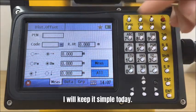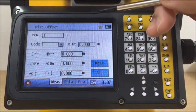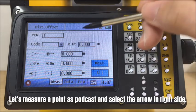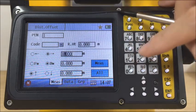Because we are not in the job, I will keep it simple today. Let's measure a point as offset and select the arrow in right side, enter 2M.